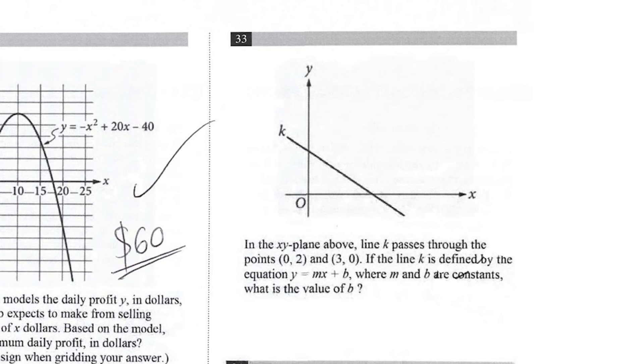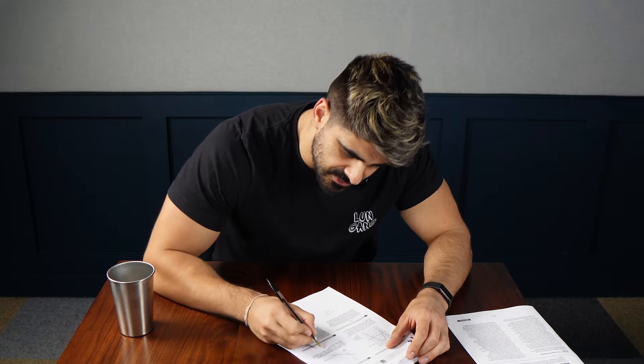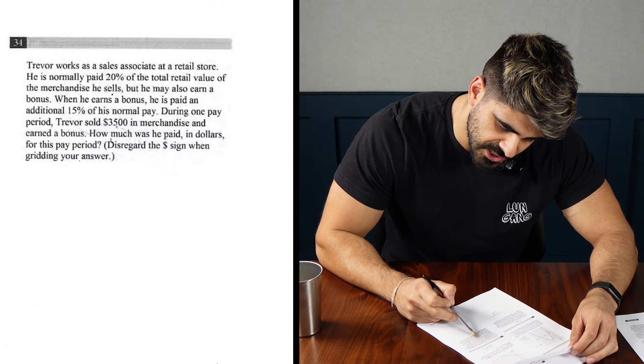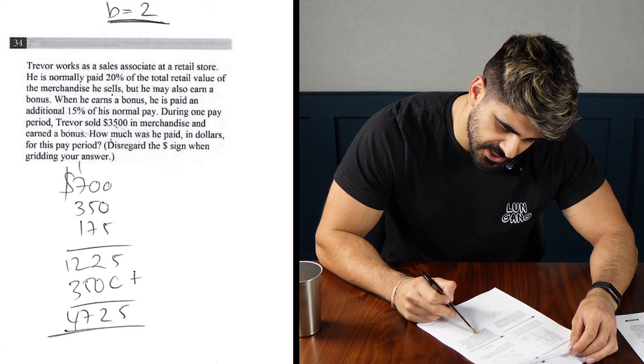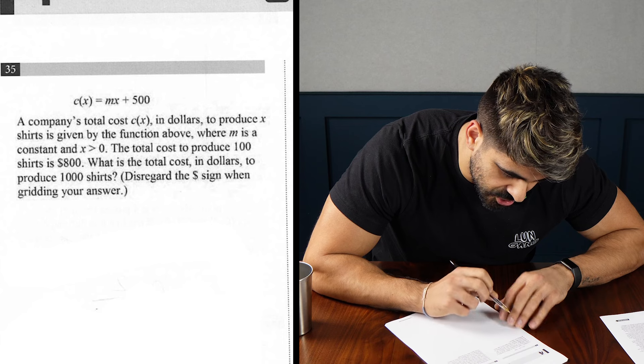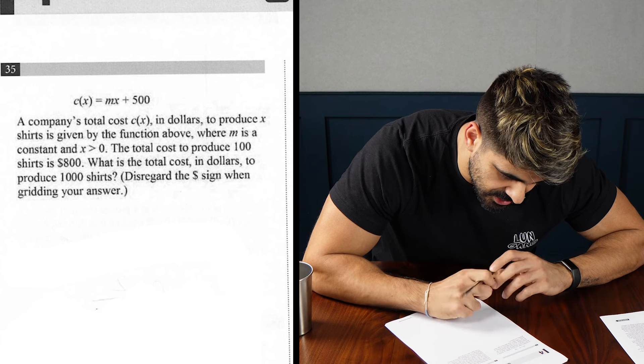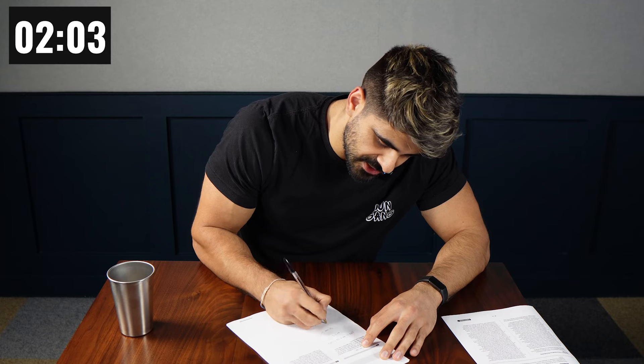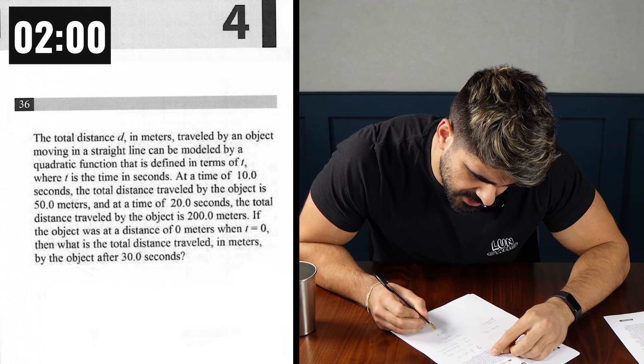In the XY plane above, line K passes through the point 0230. What is the value of B? They love this stuff. B is just two, right? Trevor works as a sales associate in a retail store. He is normally paid 20% of the total retail value of the merchandise he sells. When he earns a bonus, he is paid an additional 15% of his normal pay. During one pay period, Trevor sold $3,500 in merchandise and earned a bonus. How much was he paid in dollars? 725? I don't know. 100 shirts is $800. What is the total cost in dollars to produce 1,000 shirts? M is 3. 1,000 shirts would be 3 times 1,000 plus 500. So 3,500. What is the total distance traveled in meters after 30 seconds? So D is a half T squared. So after 30 seconds, 900 over 2, 450.